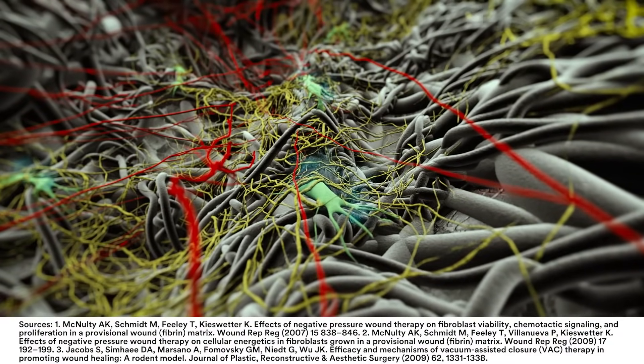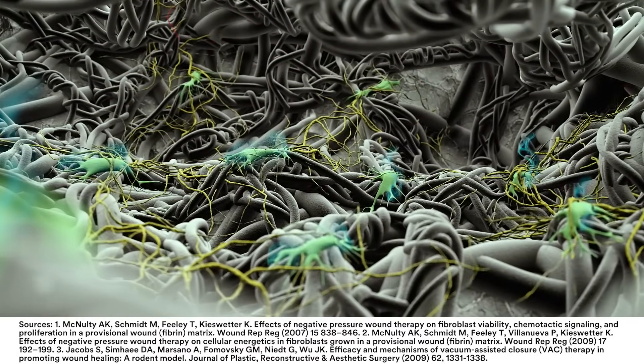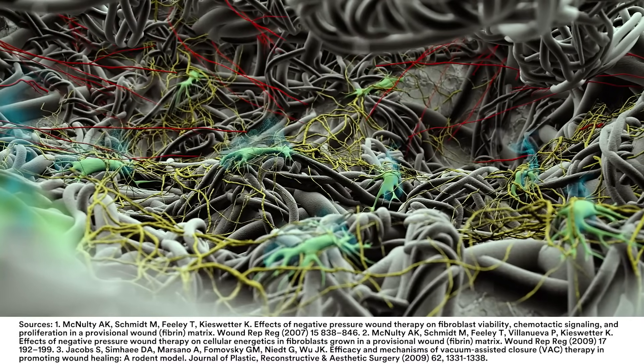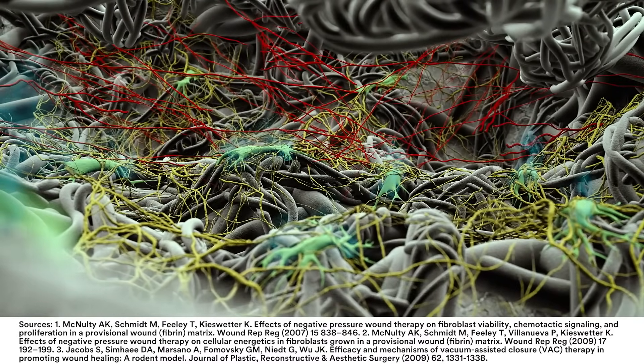In vitro and in vivo studies conducted using negative pressure have shown that these activities include increased metabolic activity, fibroblast migration, cellular proliferation, and extracellular matrix production.